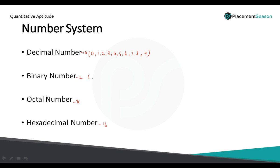In case of binary, we have only two different symbols, that is 0 and 1. If you want to represent any number, you have to use either 0 or 1. For octal, we have 8 different symbols: 0, 1, 2, 3, 4, 5, 6 and 7. So we have only 8 symbols to represent a number in octal.